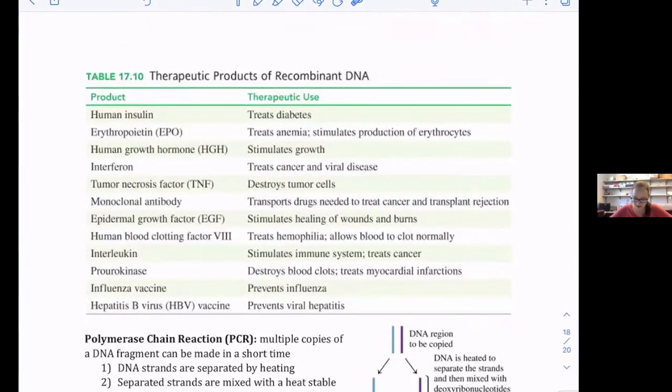These are other therapeutics made through this. Insulin is the first one we talked about, but different things like the influenza vaccine—the flu vaccine is made this way as well. I'm pretty sure that's how the COVID vaccine is made too. We'll talk more about recombinant DNA topics in future videos.